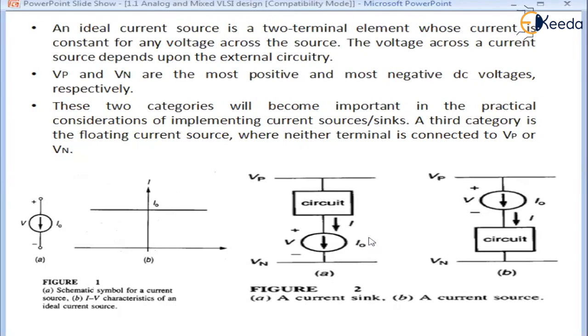The two possible configurations are current sink and current source, and the third is the floating current source, when neither of the terminals is connected to Vp or Vn, that is the most positive terminal and most negative terminal.